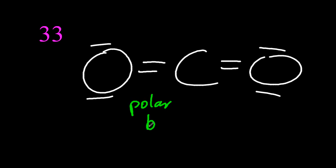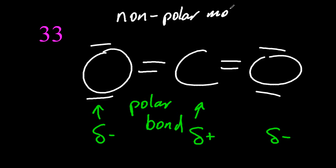They love carbon dioxide at the IB, because the bond is polar, there's a difference in electronegativity that's quite big between oxygen and carbon, but the molecule is non-polar.